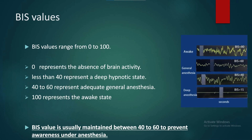BIS values range from 0 to 100. 0 represents the absence of brain activity. Less than 40 represents a deep hypnotic state. 40 to 60 represents adequate general anesthesia. 100 represents the awake state. BIS value is usually maintained between 40 to 60 to prevent awareness under anesthesia.